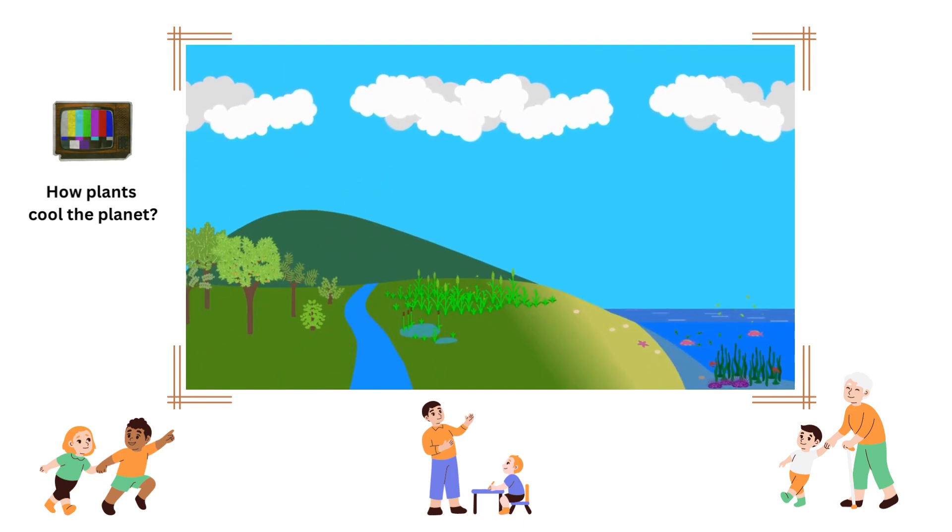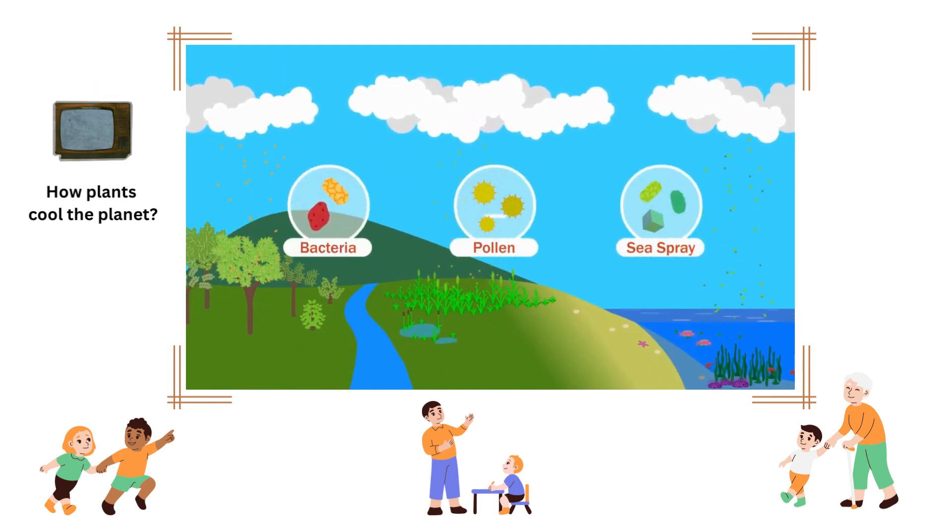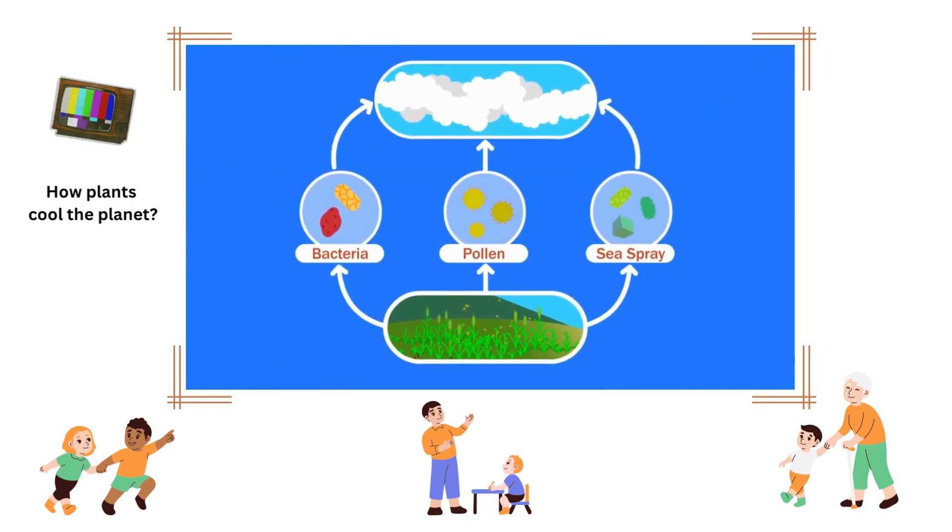Forests, grasslands, and marine ecosystems each produce their own kind of condensation nuclei as well. In this way, plants seed clouds.